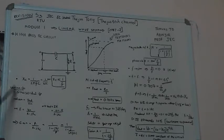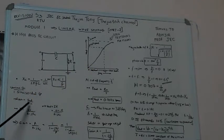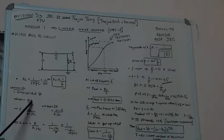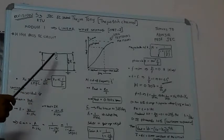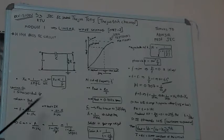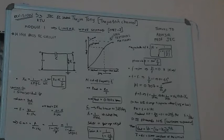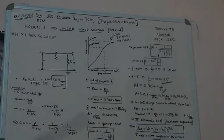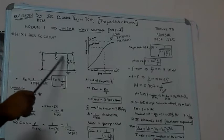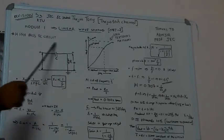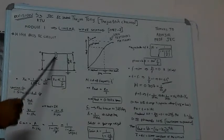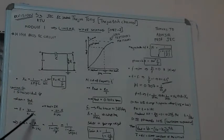Our aim is to find the gain — what is the gain of the circuit? V out by V in. Output by input — gain is always output by input. Let I be the current through the circuit. I is equal to V in divided by R minus jXC, considering this loop — V in divided by the total impedance, which is R minus jXC.